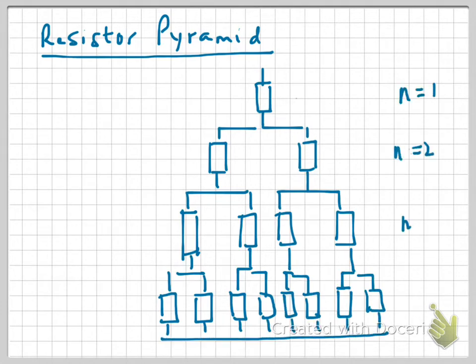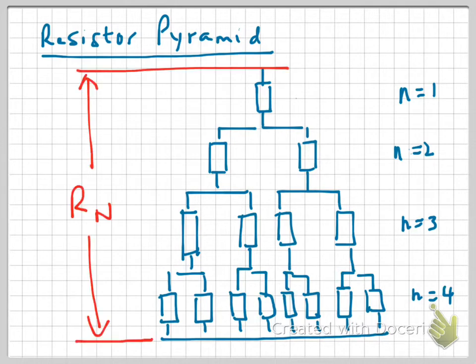And each level we can label as n equals 1, 2, 3, and so forth, is a general formula that gives us the total resistance Rn across all the various levels.